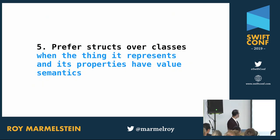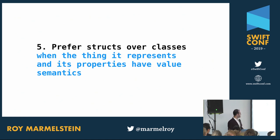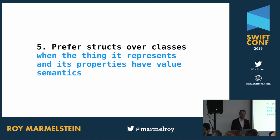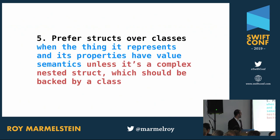Modifying the rule: prefer structs over classes when the thing it represents and its properties have value semantics, unless it's a complex nested struct with poor performance — in that case, back it with a class.